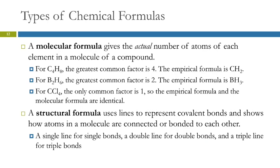A molecular formula, this is the type we use a lot. This gives us the actual number of atoms. For H2O2 that we looked at earlier, the molecular formula is H2O2. The ratio is HO, but there's actually two hydrogen atoms and two oxygen atoms.